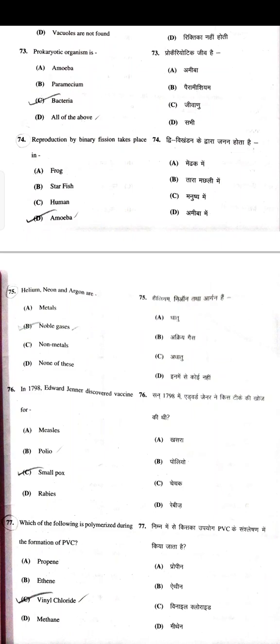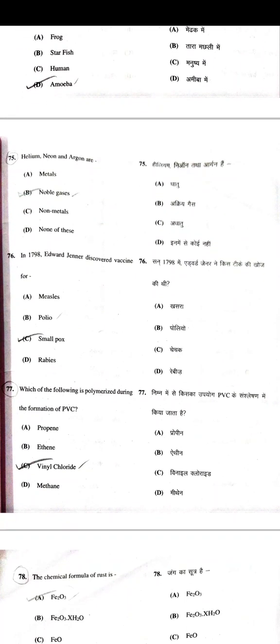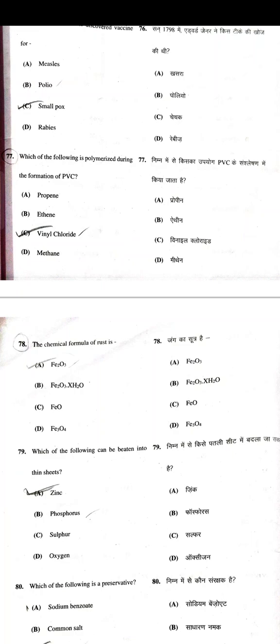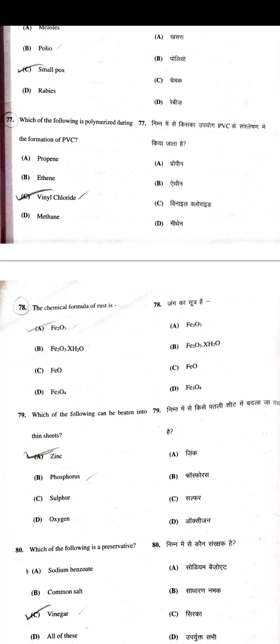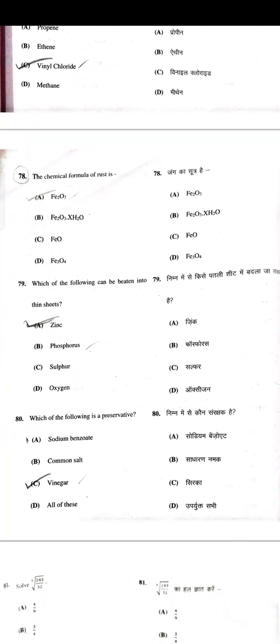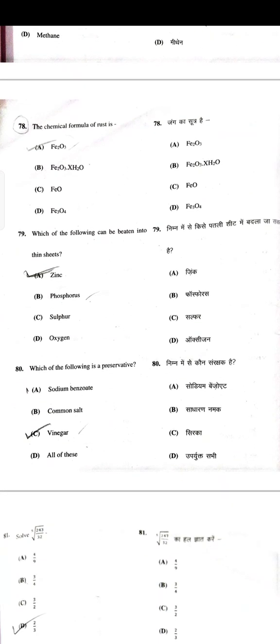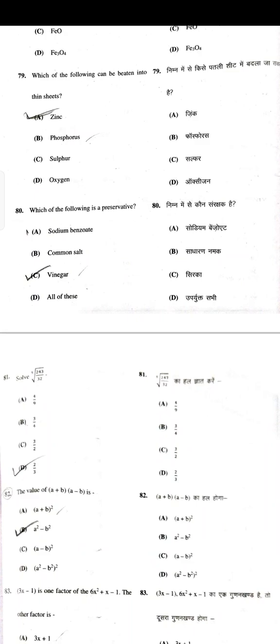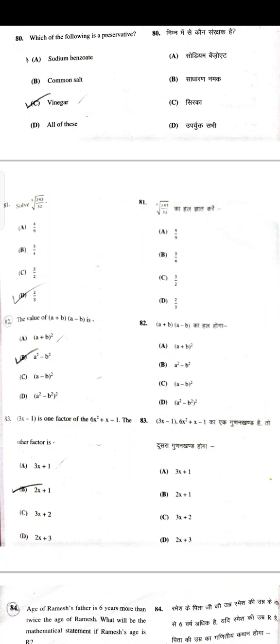Prokaryotic organism is bacteria. Reproduction by binary fission takes place in amoeba. Helium, neon, and argon are noble gases. In 1798, Edward Jenner discovered the vaccine for smallpox. Which of the following is polymerized during formation of PVC — Vinyl chloride. The chemical formula of rust is Fe₂O₃. Which of the following can be beaten into thin sheets — Zinc. Which of the following is a preservative — Vinegar.